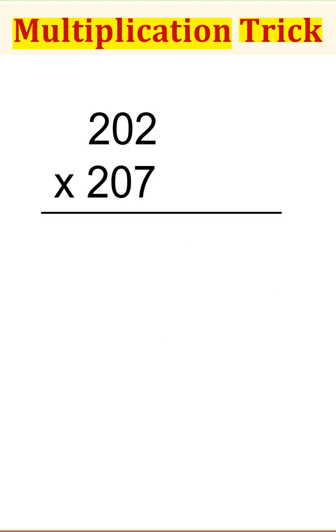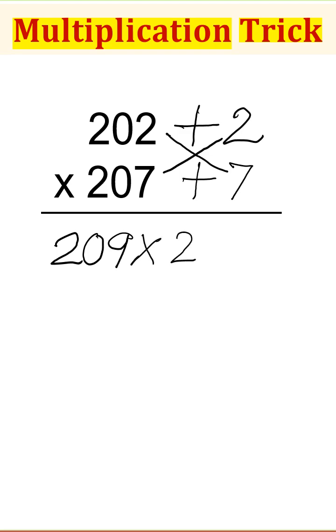And if we multiply 202 with 207, 202 is 2 more than 200, 207 is 7 more than 200. 207 plus 2 is 209, 202 plus 7 is also 209. But because the number is of base 200, we will write 209 times 2, and then we will write the product of these 2 numbers, 14 here.